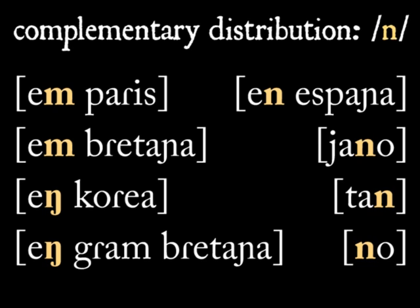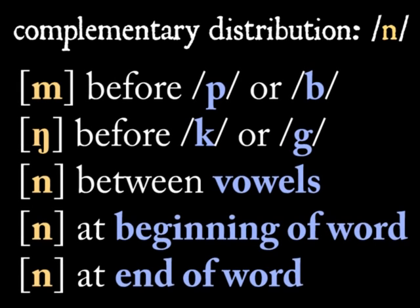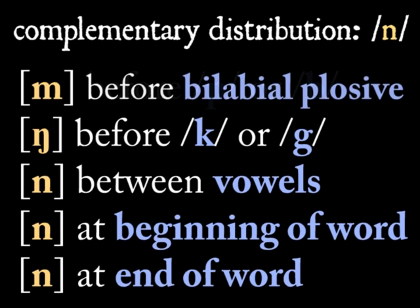This gives us some understanding of how and when to reproduce these allophones in complementary distribution. But then we can move on to make more concise generalizations using our understanding of phonetics. P and B are both bilabial plosives. We can say that the phoneme /n/ shows up as [m] before a bilabial plosive. P is a voiceless bilabial plosive and B is a voiced bilabial plosive.